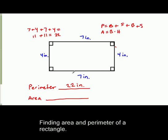So in this case, the base is 7. So we're going to go 7 times. And the height, which is perpendicular to the base, is 4. So 7 times 4 equals 28 square inches. So area equals 28 square inches.